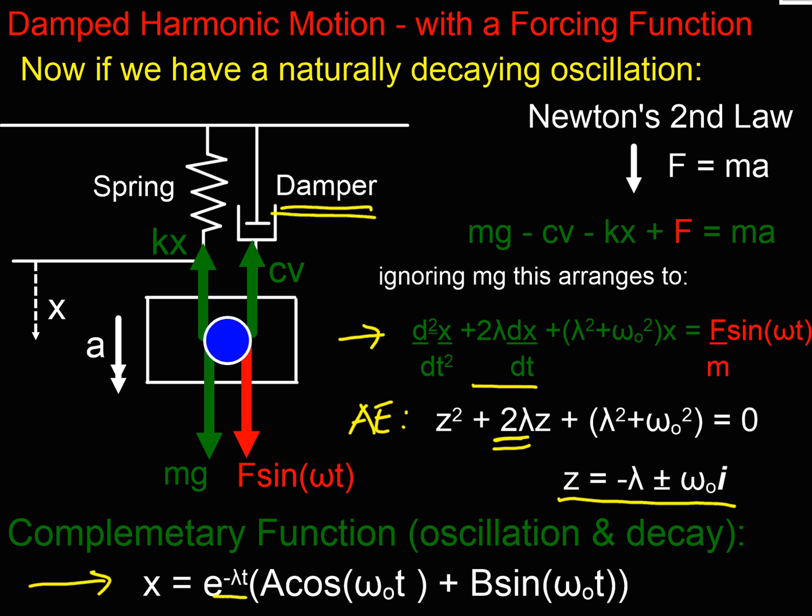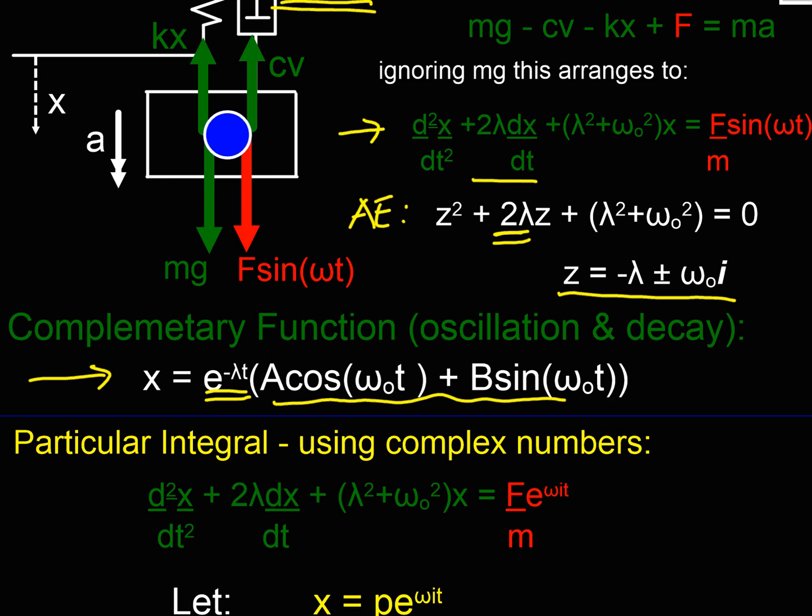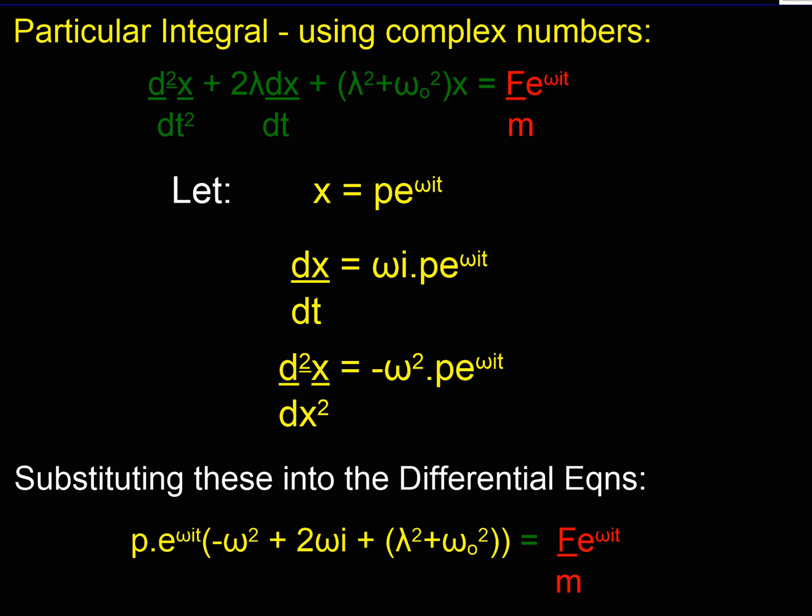So my solution has this complex solution - I've got a decay term out the front, and an oscillation term here. Now what happens when I look at this and find the particular integral? I'm now going to work in complex numbers, so rather than writing sin(ωt), I've put e^(ωit) because it makes my life easier. My trial function is x is some multiple of e^(ωit), so my velocity is that, my acceleration is that.